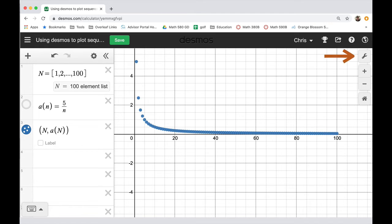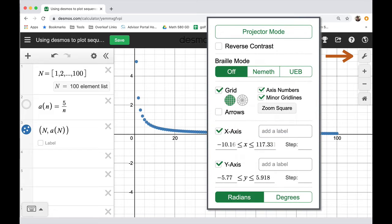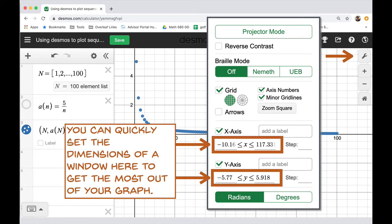By the way, if you want to make your picture look good, don't forget this wrench setting over here on the right. When you select that, you will get some options including very powerful options to resize your window quickly, so you don't have to randomly zoom in and zoom out. You can actually just set the x and y dimensions very quickly to get a nice picture.